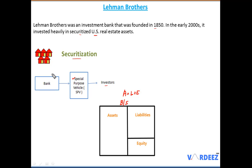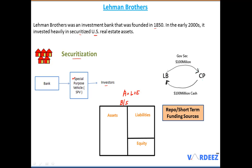The assets of Lehman Brothers — like mortgage loans given out to homeowners — were typically for more than 10 years, so very long-term in nature. Now let's talk about the liabilities: where were they getting the money from? Lehman Brothers majorly funded themselves through short-term funding sources like repo, also known as repurchase agreements. For example, Lehman Brothers would give $100 million worth of government securities to a counterparty, and the counterparty in return would give $100 million cash to Lehman Brothers.